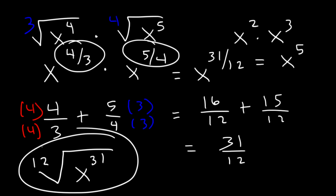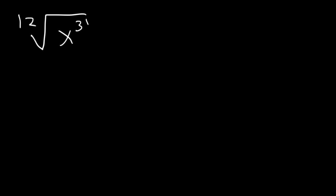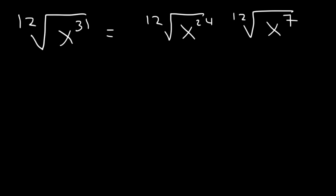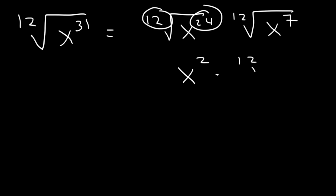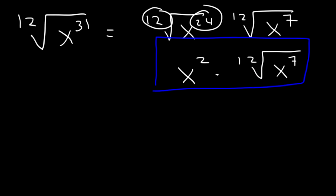We can also simplify that radical further. How many times does 12 go into 31? It goes in 2 times, giving 24, with 7 left over, since 24 plus 7 is 31. We can split it into two parts: 24 divided by 12 is 2, so this becomes x squared times the 12th root of x to the 7th. That's the fully simplified final answer.